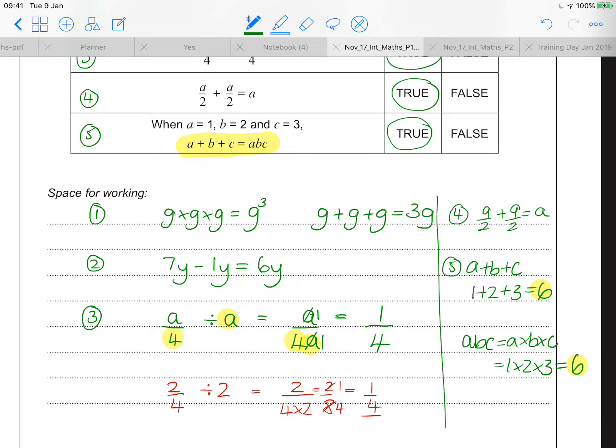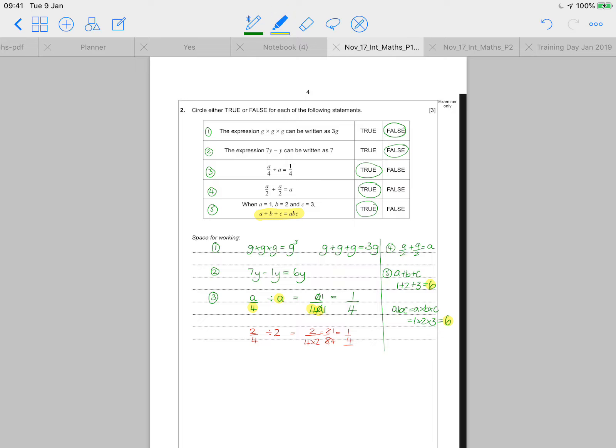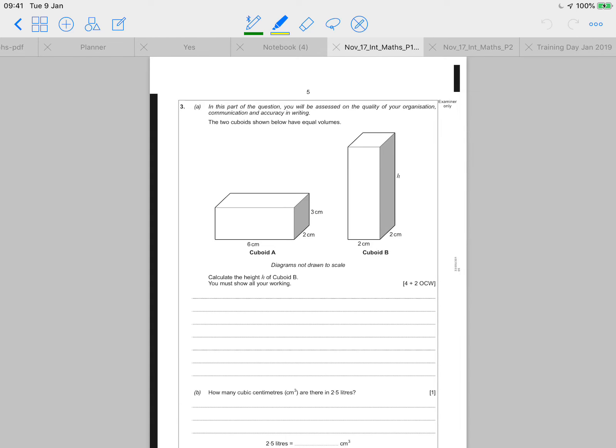That one I think is quite straightforward. I think 3 here is the worst of all of those questions. Okay, question 3. In question 3, this is the OCW question.